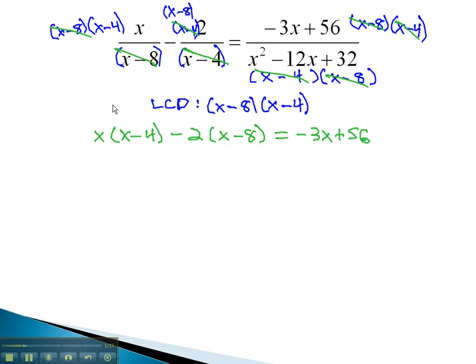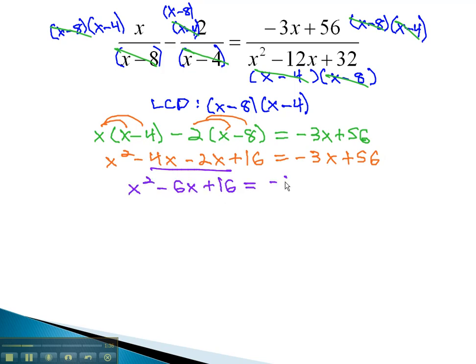From here, we should be able to quickly solve by distributing first, giving us x squared minus 4x minus 2x plus 16 equals negative 3x plus 56. And then, combining like terms to get x squared minus 6x plus 16 equals negative 3x plus 56.